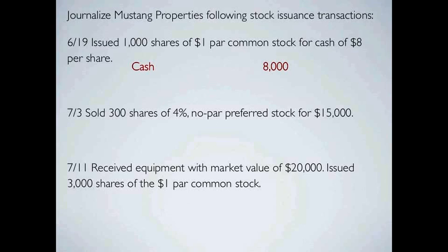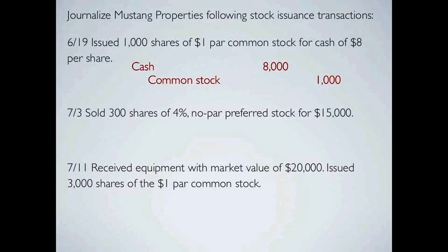Common stock is recorded in the books at par — no matter what you sell it for, it's recorded at par. So we're going to credit common stock at the par value. We sold a thousand shares with a par value of a dollar per share, so common stock is credited for a thousand dollars. But we don't balance. This is because of that new account in the stockholders' equity section called paid-in capital in excess of par. We issued this stock seven dollars above par, so our paid-in capital in excess of par — common stock — would be seven thousand dollars. And now we balance.